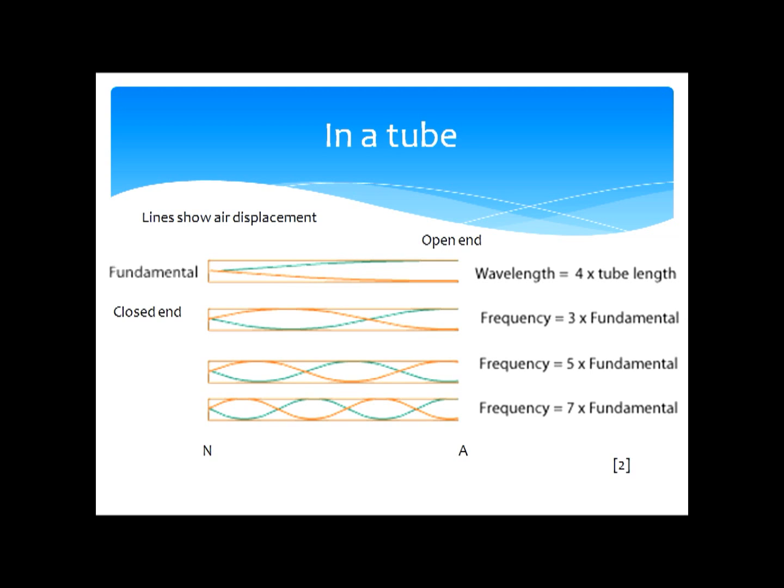If you were to increase the pitch of the sound, then you would increase the frequency in the tube and get the tube to resonate at, say, three times the fundamental or five times the fundamental, varying the number of nodes and anti-nodes in the tube.